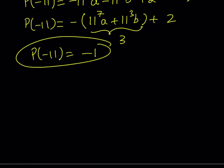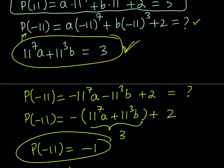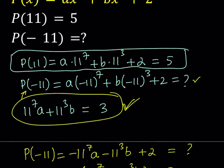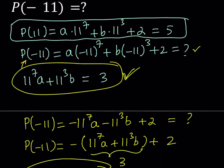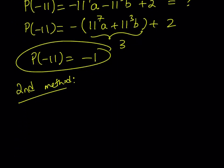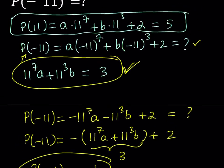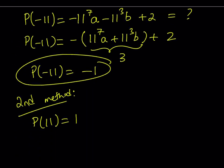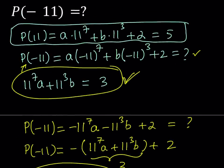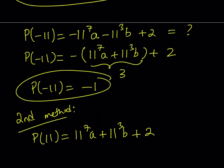So my second method involves the following. So let's go ahead and write down what we have so far. We have P of 11, and that is equal to 11 to the 7th A plus 11 to the 3rd B plus 2, right? And we know that it's equal to 5.